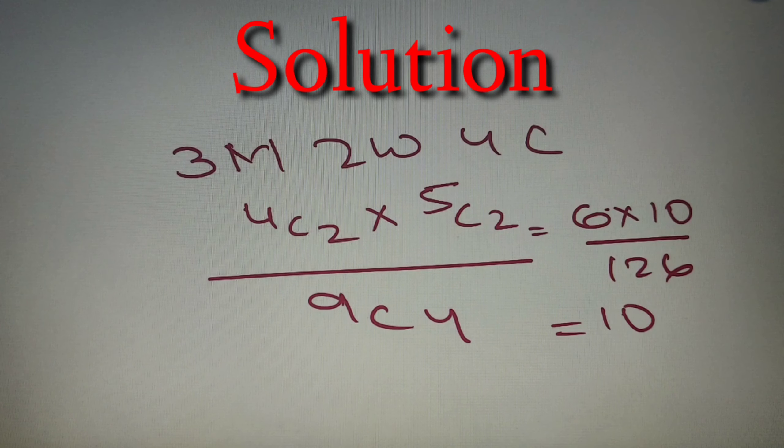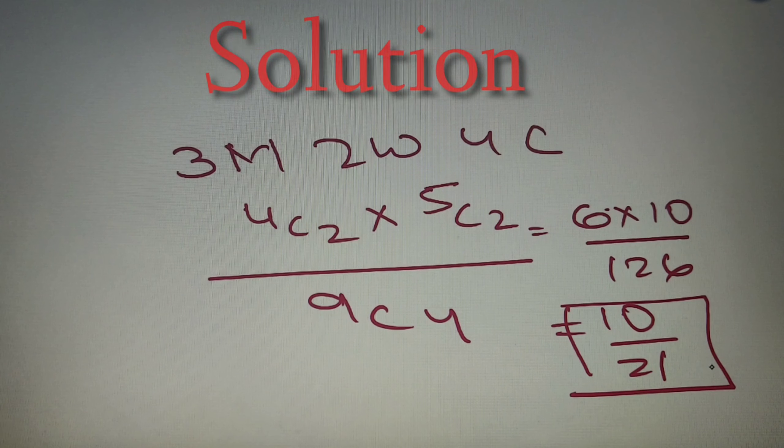And if we simplify, we'll get our final simplification as 10/21, and according to our given option it is option number D. So final answer is option number D: 10/21.